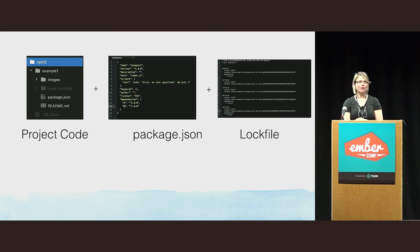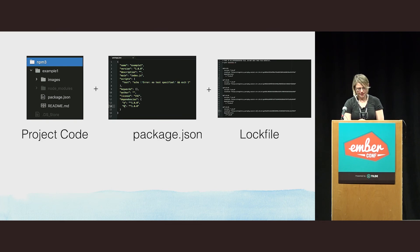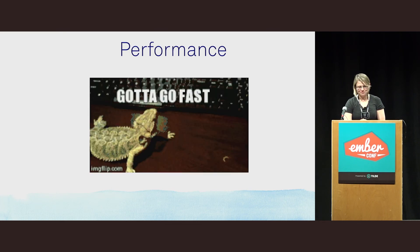So we now have the holy trinity of package management: project code, the manifest file, and the lock file — computer-written and driven by the Yarn algorithm.